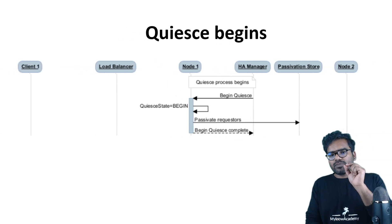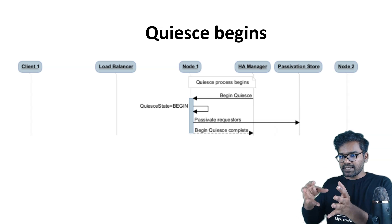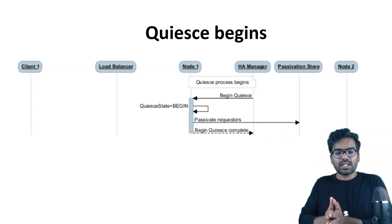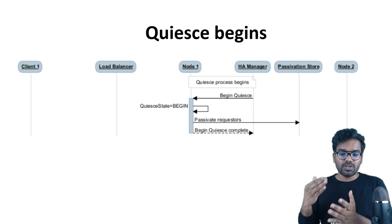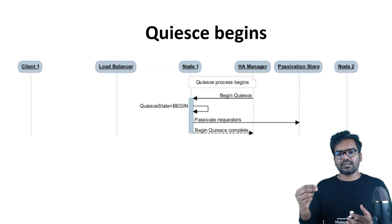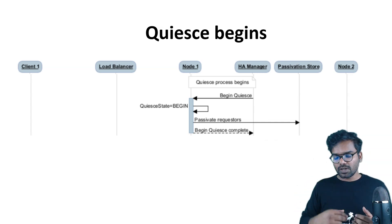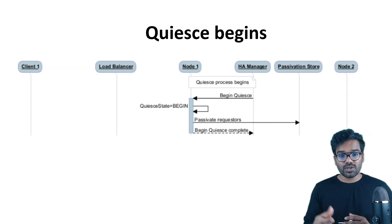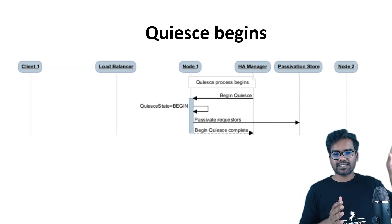When quiesce begins, the HA Manager or high availability manager can trigger the quiescing process. Maybe he restarts the server, maybe he brings the server down, or maybe he uses an API call to start the quiesce process. So there are different situations through which an HA Manager can start the quiesce process. Let's say a quiesce process is triggered for node 1 — it means you are going to bring node 1 down. The quiesce state begins, and as soon as it begins it performs passivation — that is why I explained that lecture earlier.